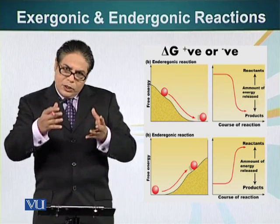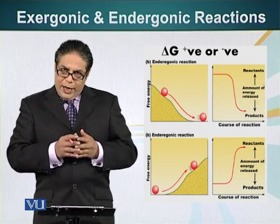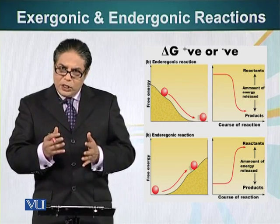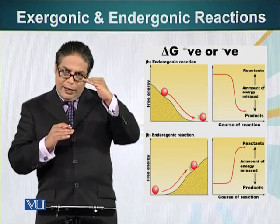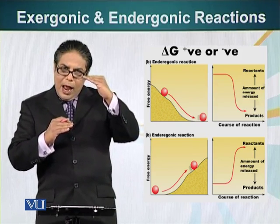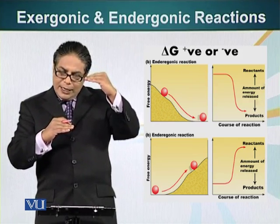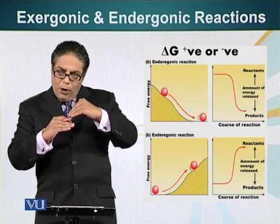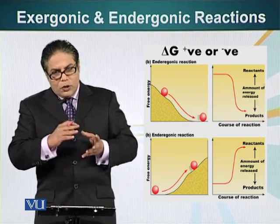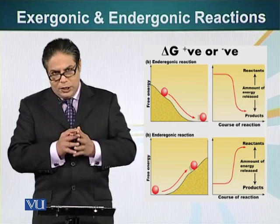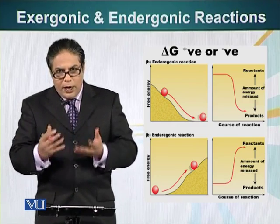Using this analogy to understand reactions, there are two types. In one type, the reactants are at a higher energy level, and when the reaction occurs, the products are at a lower energy level. So energy is released from the system — these are exothermic or exergonic reactions.